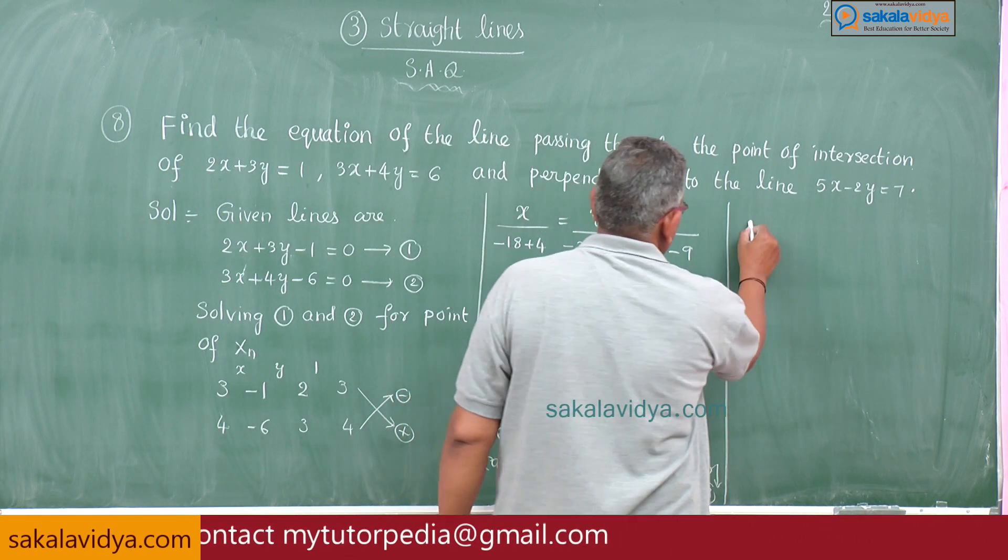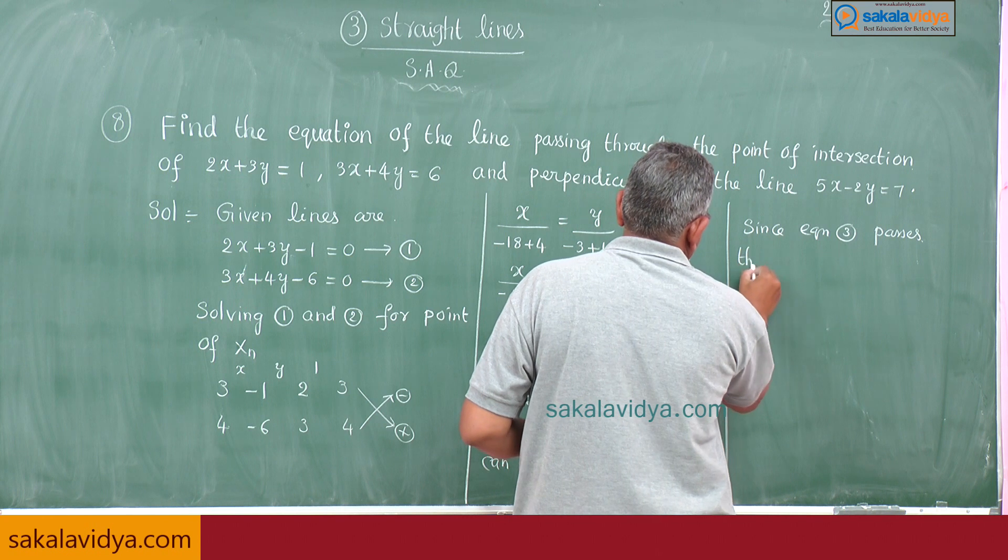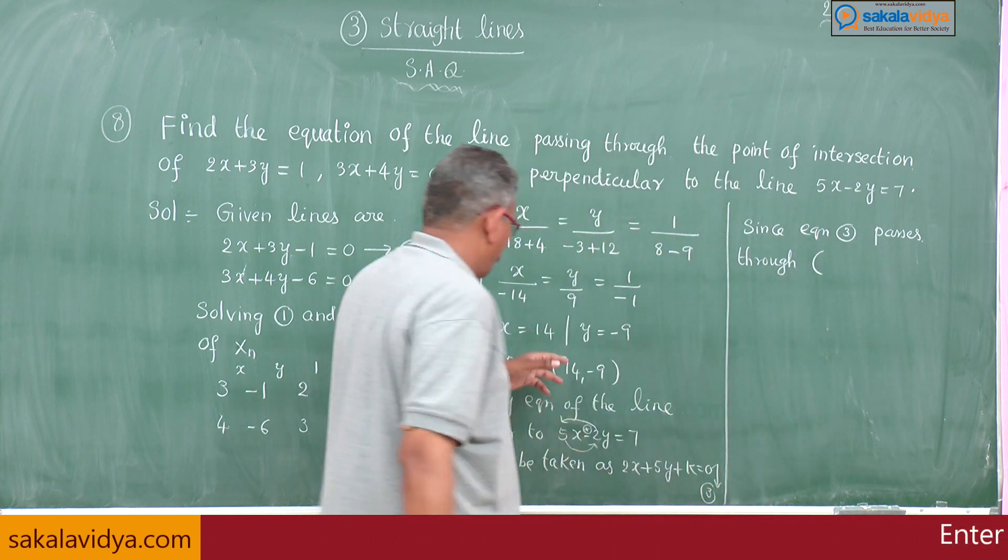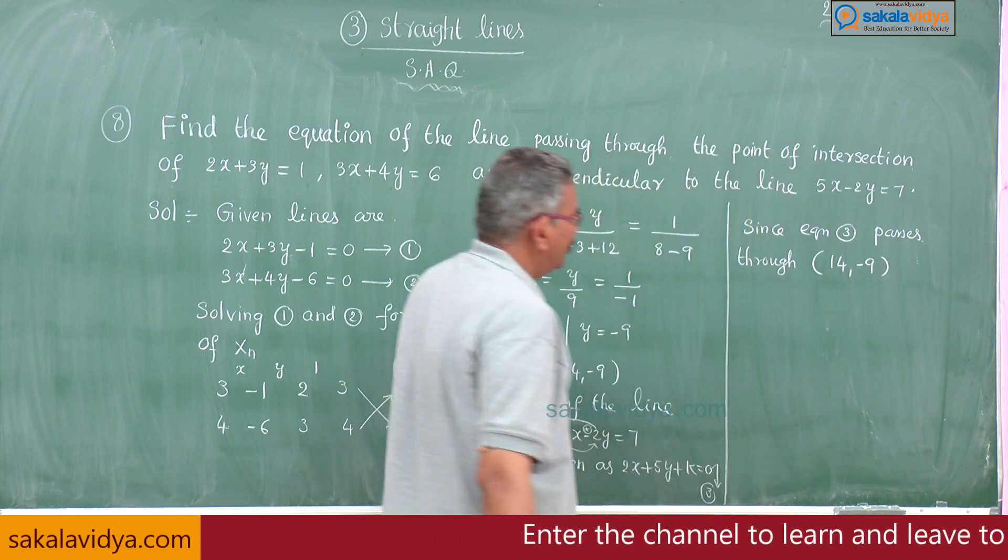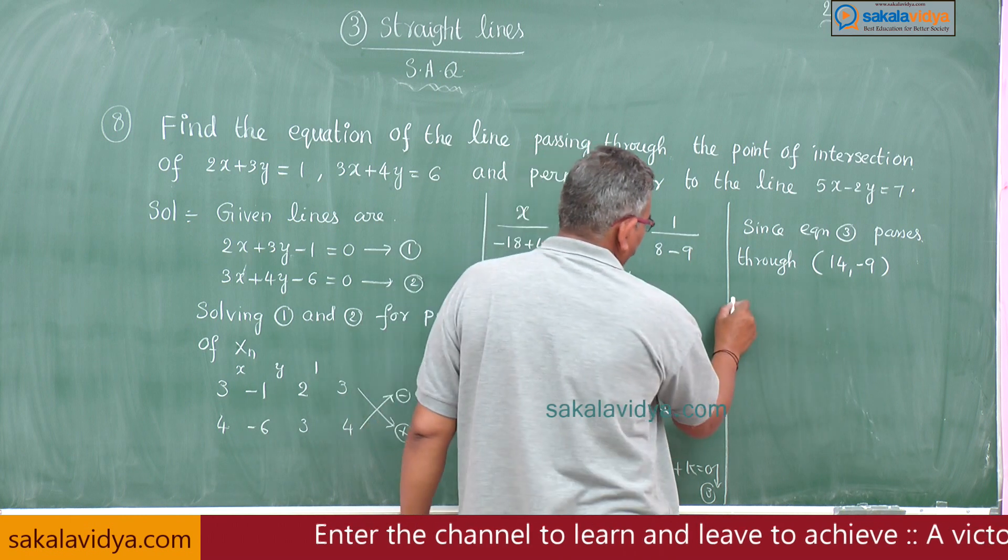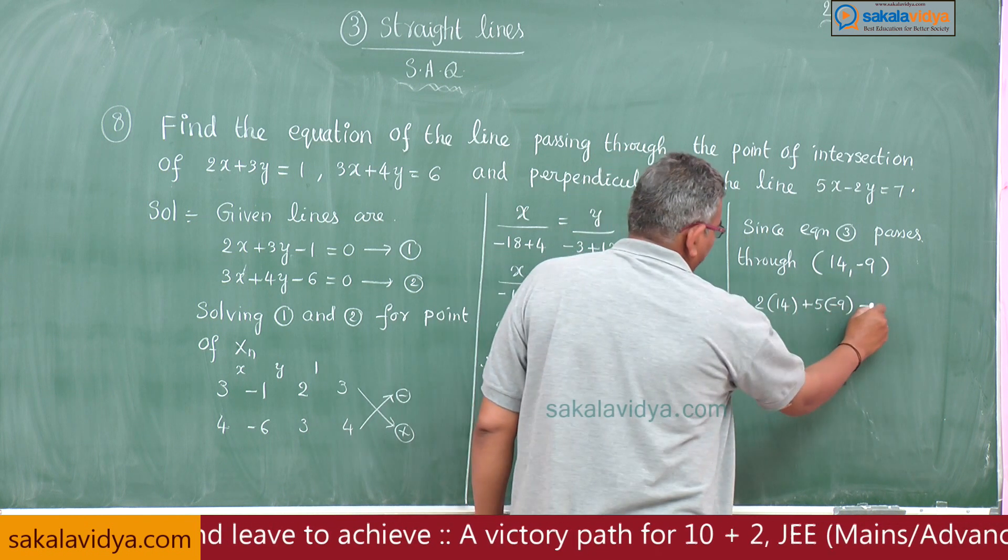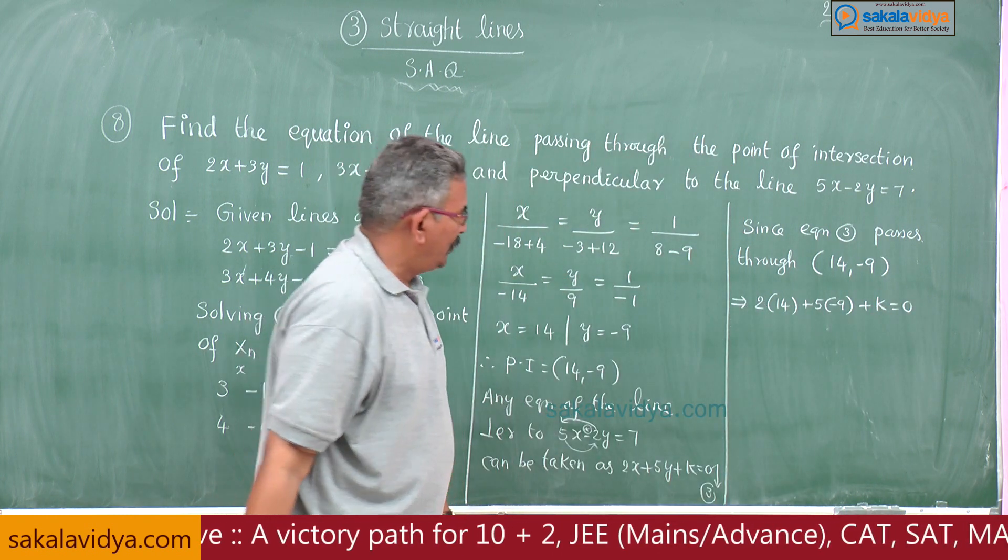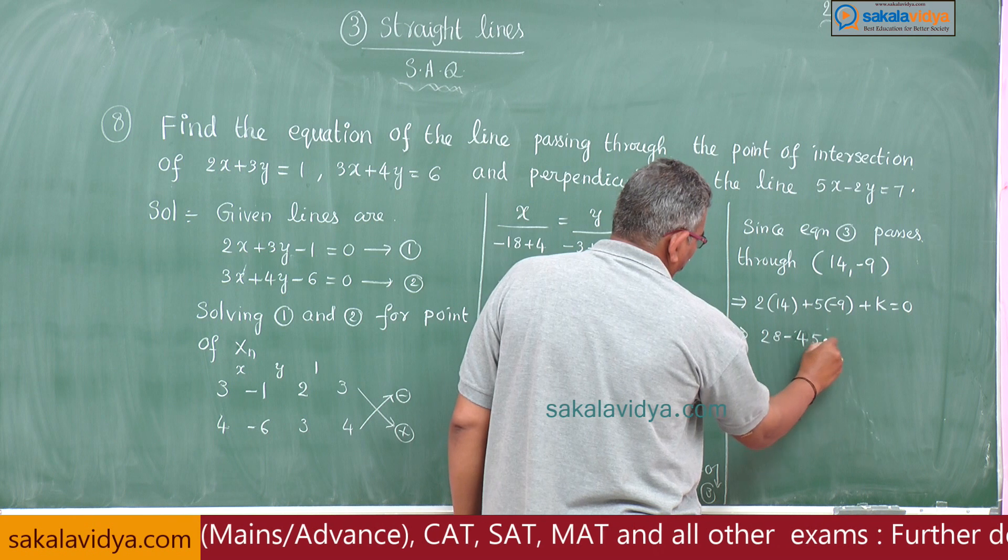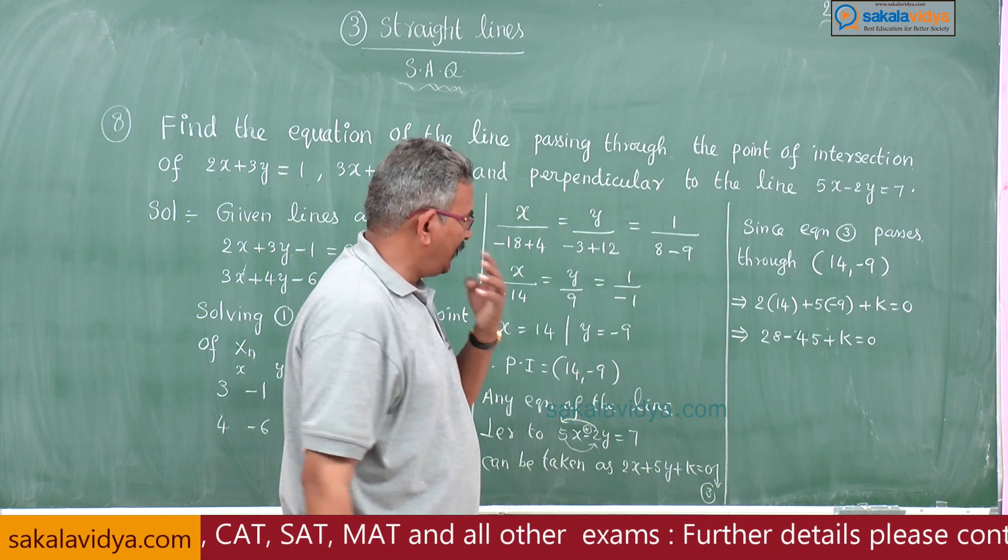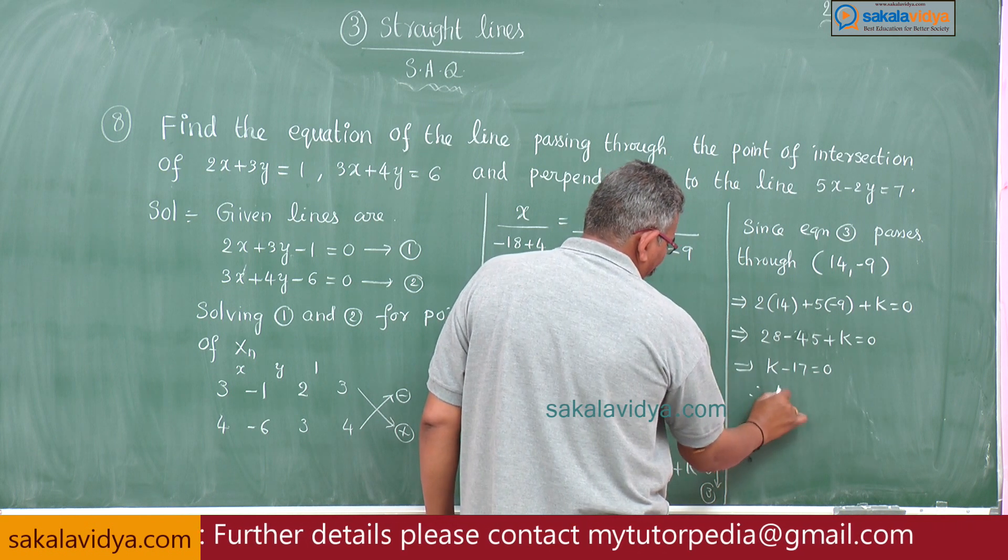Since equation 3 passes through the point of intersection, what is the point of intersection? 14 comma -9. Replacing 14, -9 here: 2 into 14 plus 5 into -9 plus k = 0. 28 minus 45 plus k = 0. 45 minus 28, this will be 17. So k-17=0. Therefore k=17.